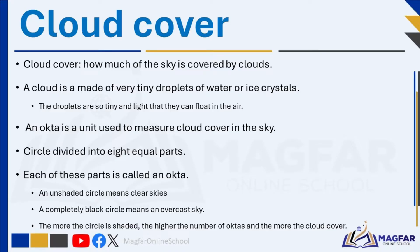An octa is a unit used to measure cloud cover in the sky. Imagine the sky as a big circle divided into eight equal parts — each part is called an octa. Meteorologists count how many of these eight parts are covered by clouds. Symbols such as shaded circles are also used to show this: an unshaded circle means clear skies with no cloud, while a completely black circle means an overcast sky.